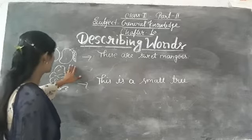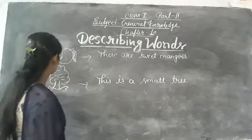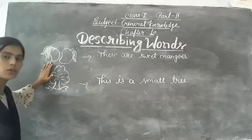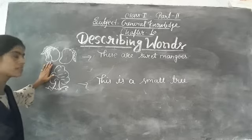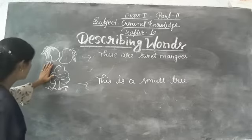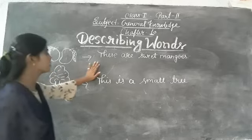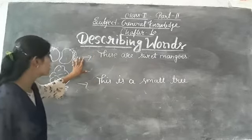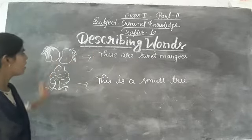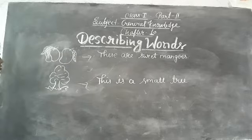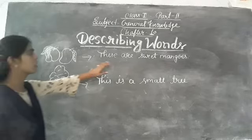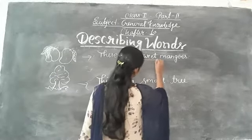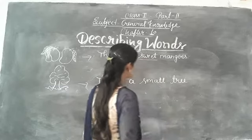Let's see another example. What is this? These are mangoes. How are these mangoes? These are sweet mangoes. What is the adjective here? 'Sweet' is the adjective here.